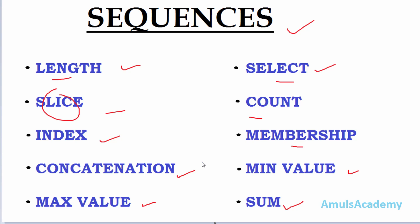Hello guys and welcome to Python programming tutorials by Amuls Academy. In the previous tutorial we discussed 5 sequence operations: length, select, slice, count, and index. In this tutorial we will discuss the remaining 5 operations: membership, concatenation, minimum value, maximum value, and sum.